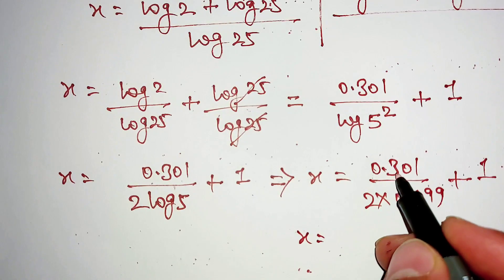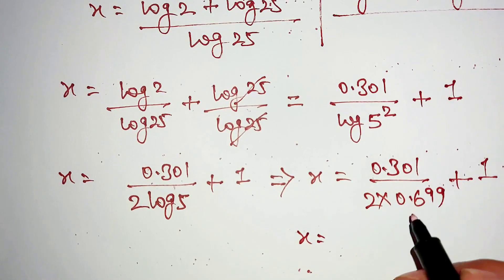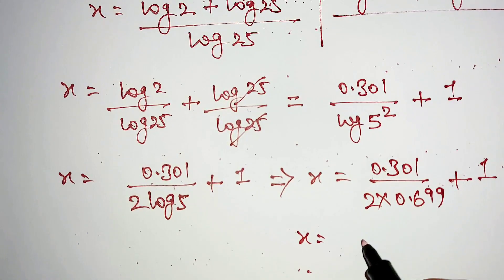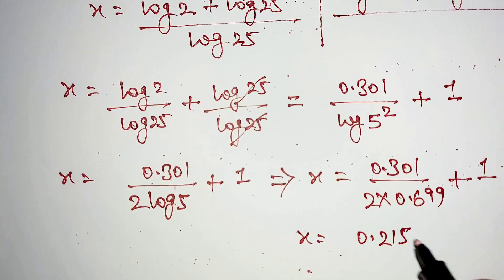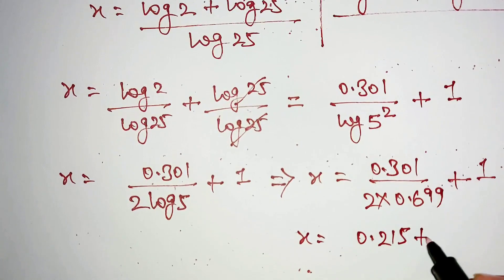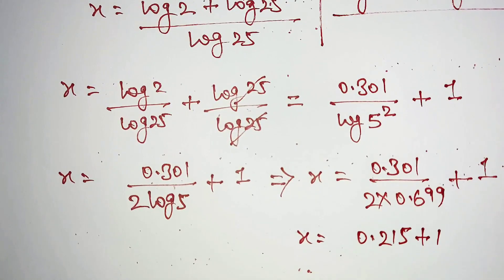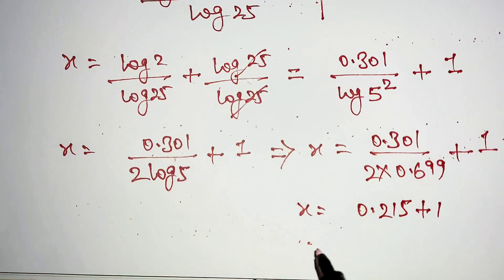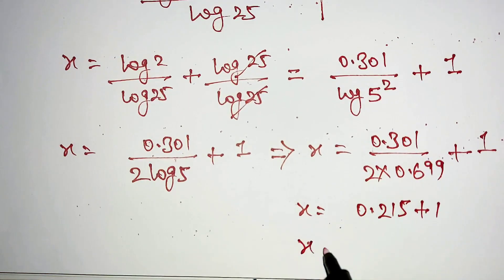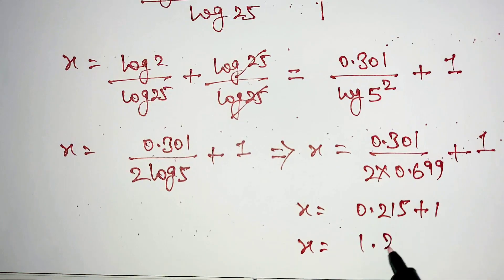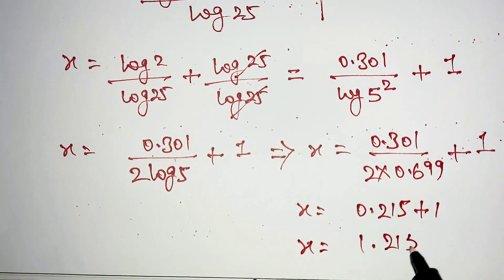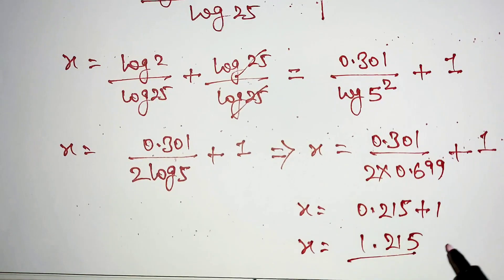If we divide this, our final value of x is 1.215.